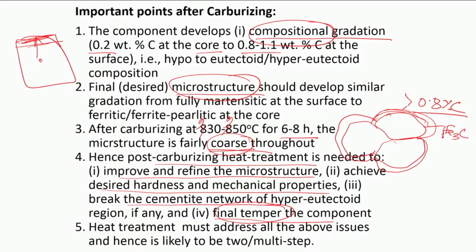In general, imagine this is a component that we have carburized: the core is 0.2 percent and the surface is, let us say, 1 percent carbon. So obviously we are talking as if about two different steels merged into one.